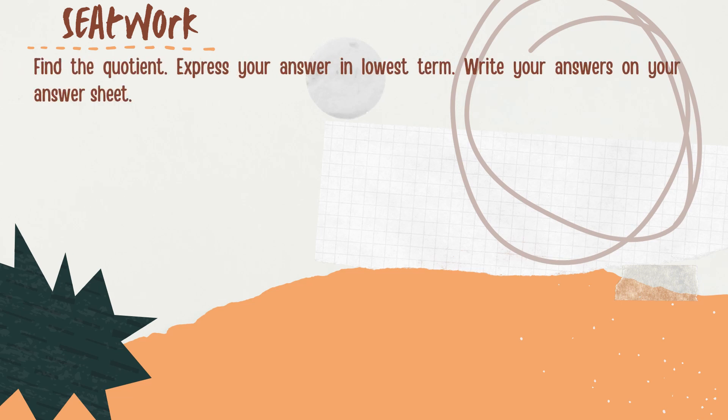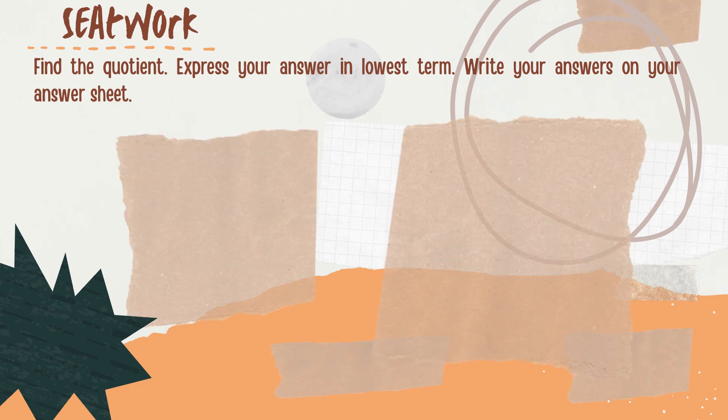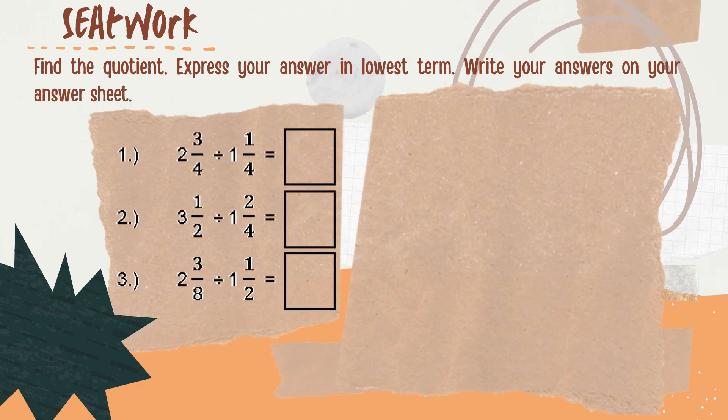Now let's apply what you have learned. Find the quotient and express your answer in lowest terms. Write your answers on your answer sheet. We are going to answer number 1 as your example. What's the first step? Identify which is the dividend and which is the divisor. In number 1, 1 and 1 fourth is the divisor, and 2 and 3 fourths is the dividend.